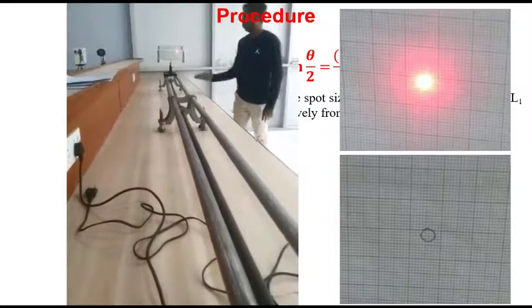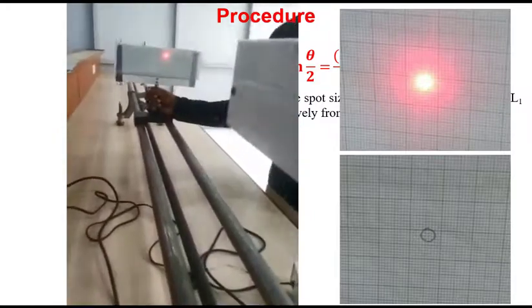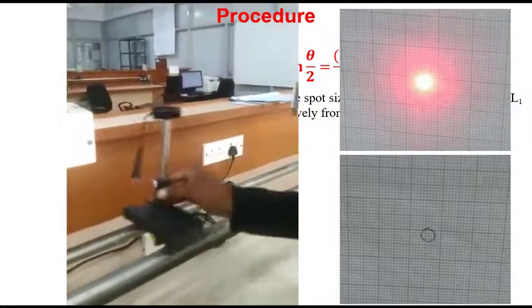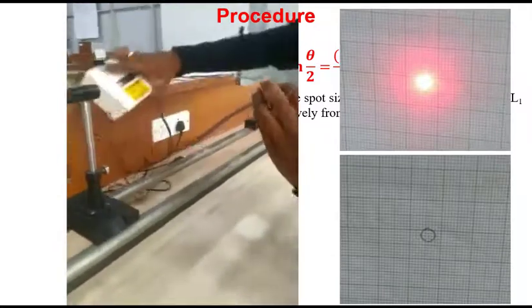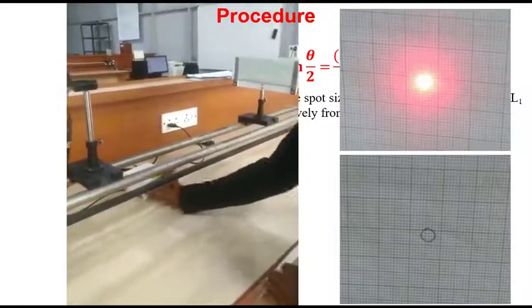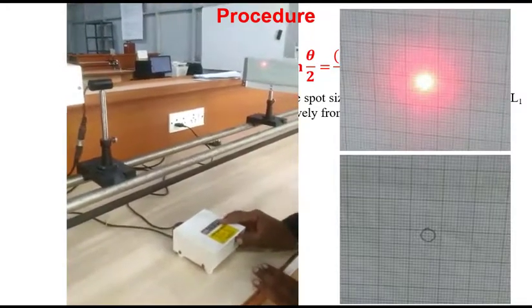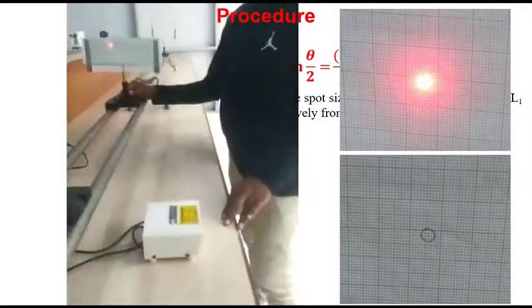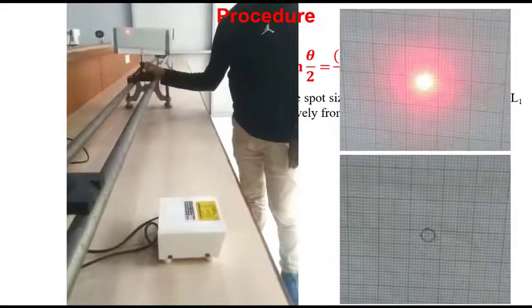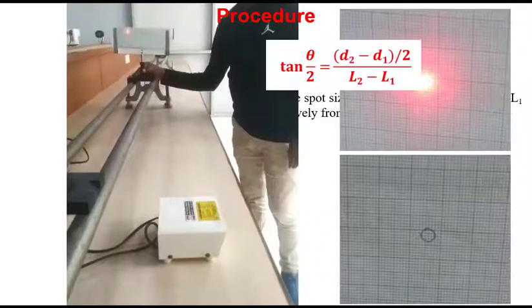The same procedure is to be repeated for diode laser. To change the diode, first switch off the helium laser and then put diode laser on the sliding bench. For diode laser, you have a separate device to control current through it. Connect it and start it. And now you find d1 and d2 at l1 and l2 distances from that laser diode also. Now you are done with measuring d1, d2 and l1 and l2 for helium laser as well as for diode laser. The formula described previously is sufficient now to calculate the values of divergence angles for the lasers.